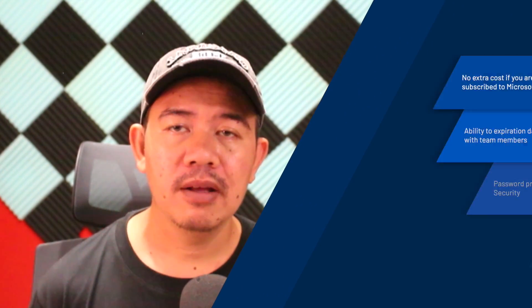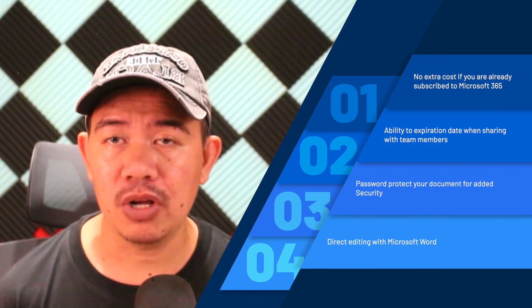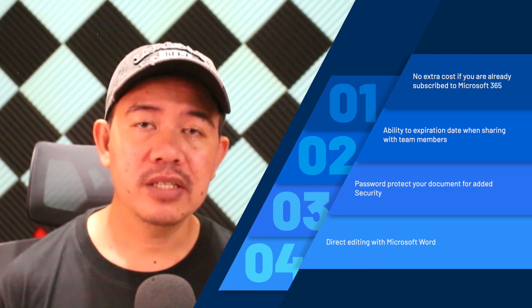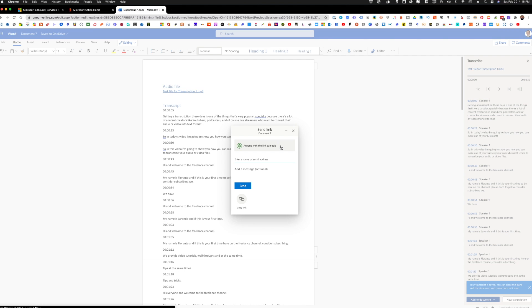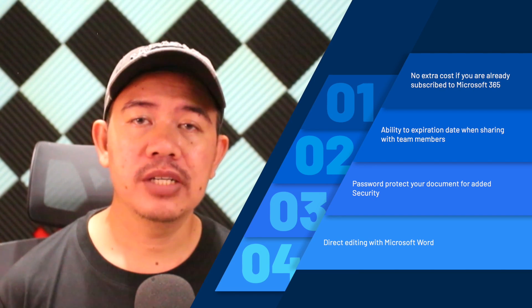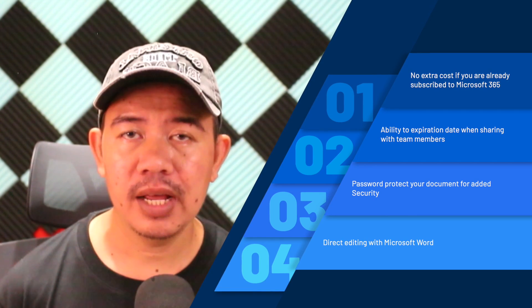Just to recap, here are some pros and cons of using Microsoft Word to transcribe. For the pros: there's no extra cost if you are already subscribed to Microsoft 365. You have the ability to set an expiration date for sharing the transcription with a team member, and you can also password-protect the document to avoid unwanted access. There is direct editing into Word, and you can also collaborate with your team.